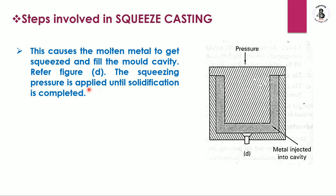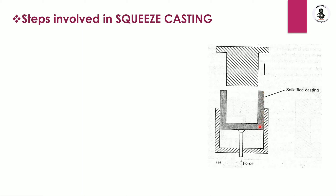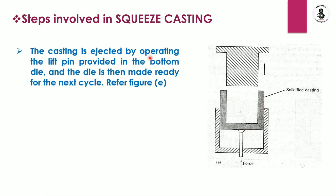This causes the molten metal to get squeezed and fill the mold cavity. The squeezing pressure is applied until solidification is completed. Then, by removing the pressure via the top die, the solidified casting — in the required shape and size — is ejected using the ejector pins. The casting is ejected by operating the lift pin in the bottom die, and the die is then made ready for the next cycle.